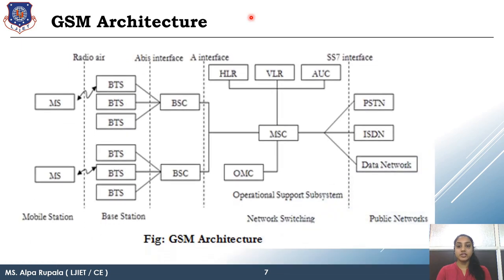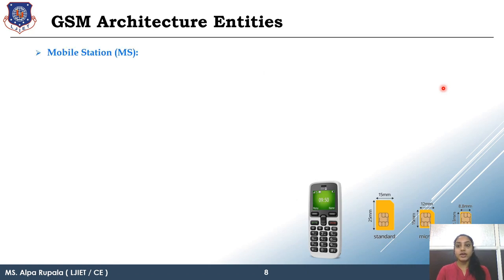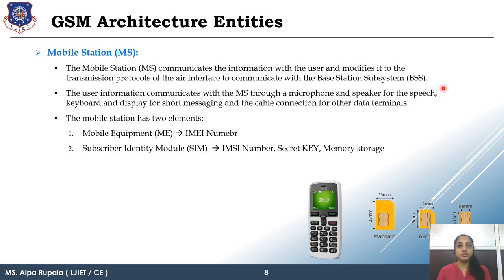Now we will see the MS in detail. MS is a combination of mobile equipment and Subscriber Identity Module — your SIM card. Each mobile equipment has one unique identification number, that is your IMEI number — International Mobile Equipment Identity number. The SIM card has a special number known as the IMSI number. We will learn all these fundamentals in much more detail.